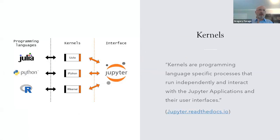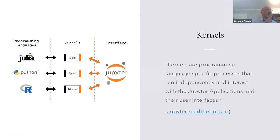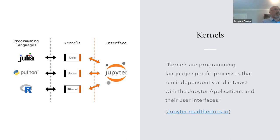Now about the kernels. Jupyter is an interface that allows you to write text and code and share it. You have your programming language - Julia, Python, and R, but there are many more that Jupyter can support. Kernels are programming processes that interface and interact between your Jupyter and your programming language.